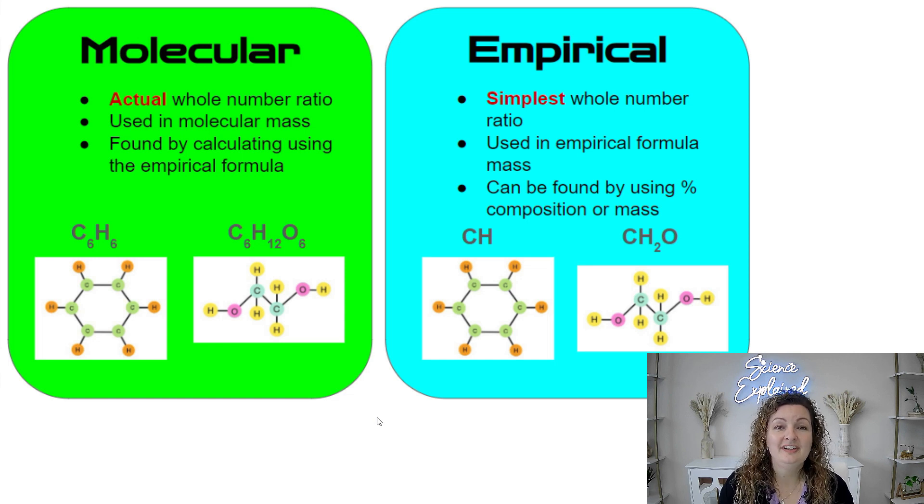The empirical formula is the simplest form of a formula. That is like the reduced ratio of the formula or the smallest we can get it. The molecular formula is going to be larger than the empirical formula the majority of the time and the molecular formula you can usually reduce down to get to the empirical formula. So let me show you what I mean here.